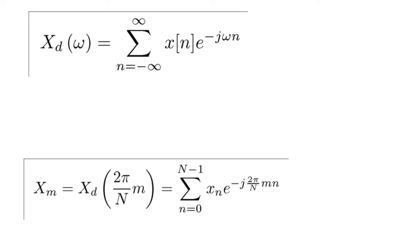The equation on the bottom left shows us how we represent the DTFT mathematically. We evaluate X_d of omega at 2 pi over N times m, where 2 pi over N is the spacing between our samples, and m is the index of our samples. As you can see, 2 pi over N times m simply replaces omega in the DTFT formula. We also change the limits of the summation to 0 to N minus 1.